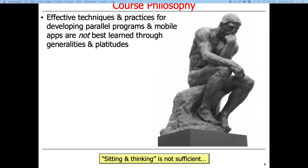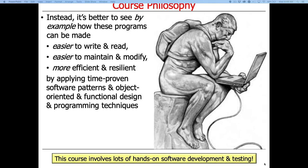Having taught this class for many years, the key observation is that it's not enough to just read papers and books about multi-core technologies — you've got to try it out, play around with it, learn by doing. If you want software that's parallel and takes advantage of all these cores, yet still easy to read, write, maintain, debug, and more efficient, you need modern technologies combining object-oriented and functional programming features, design techniques, and patterns.